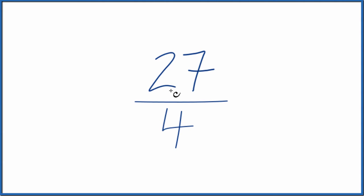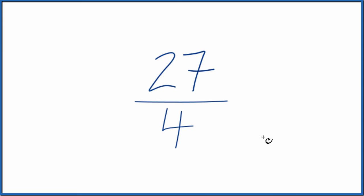Let's write the fraction 27 over 4 — 27 fourths — as a mixed number. We know that 27 is bigger than 4, so we're going to end up with a number that's greater than 1. Here's how you do it: we divide 4 into 27.